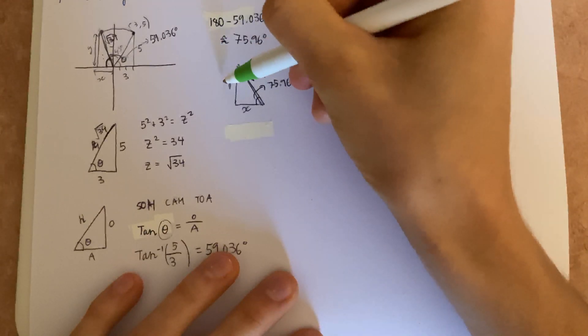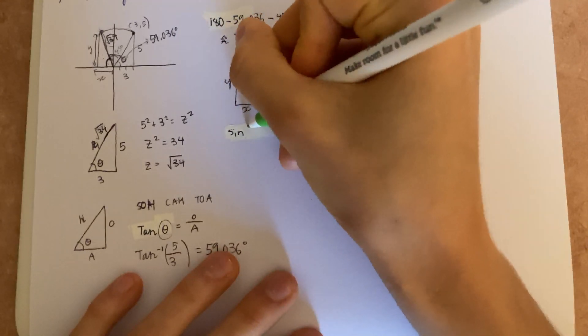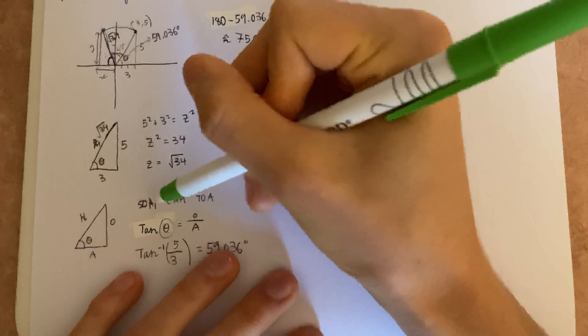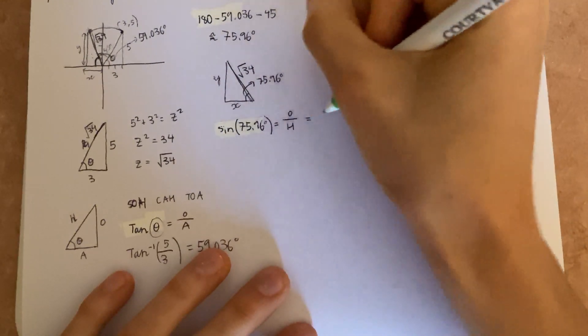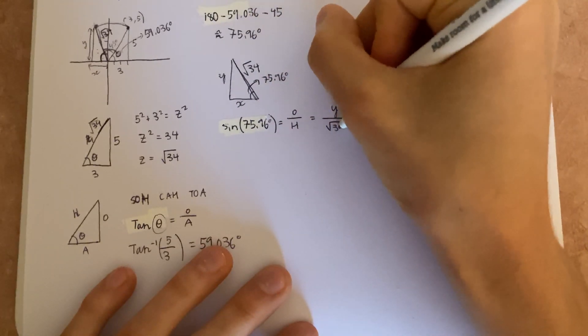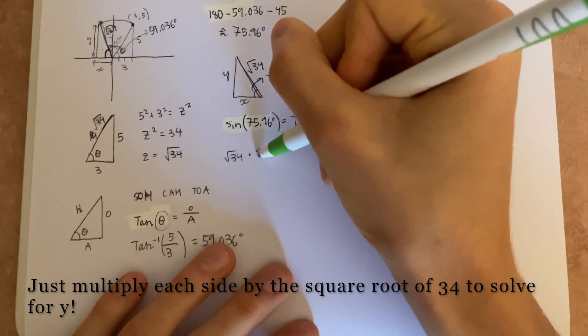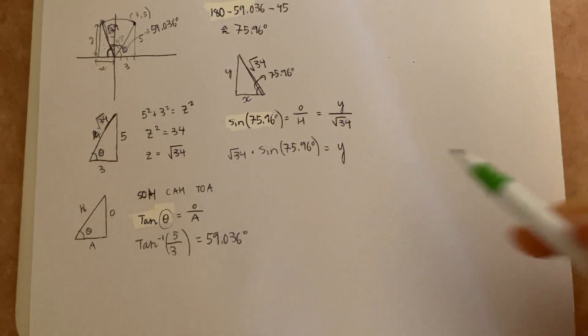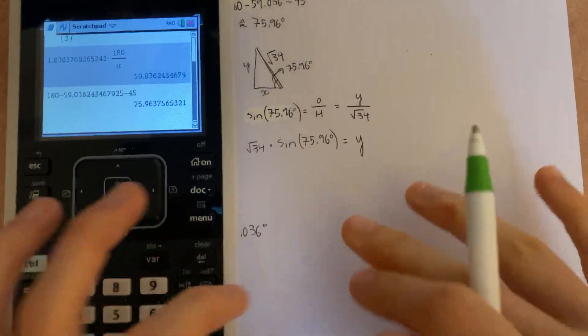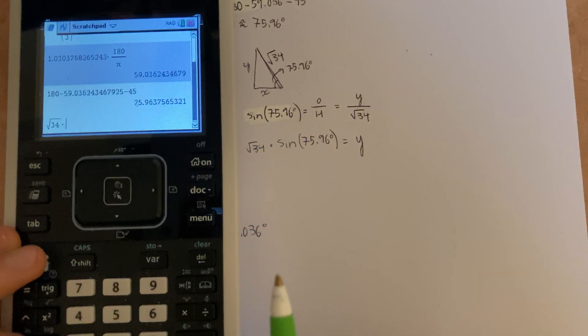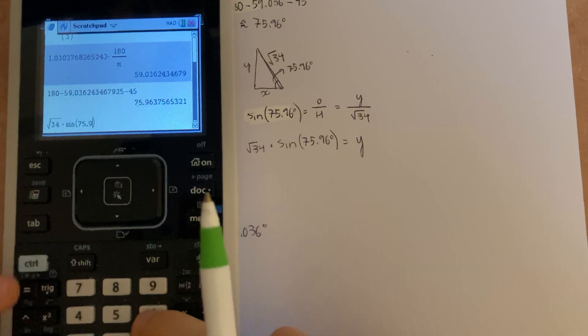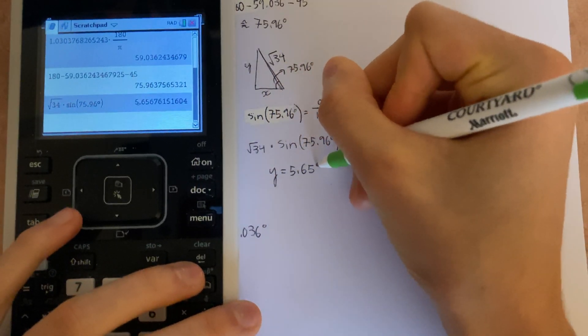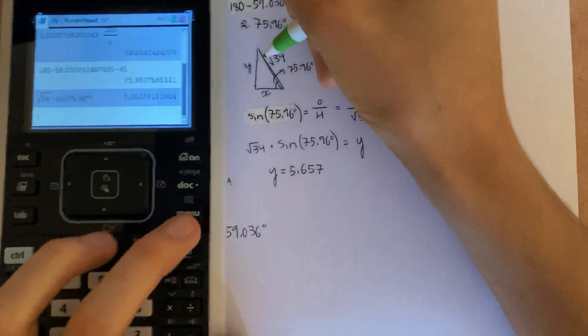Let's start off by solving for y. We know the hypotenuse and we know the angle, so we can use the sine function to solve for y. So the sine of this angle, 75.96 degrees, equals opposite over hypotenuse. That's y over the square root of 34. So the square root of 34 times the sine of 75.96 degrees equals y. So we can use our calculator to solve for y. The square root of 34 times the sine of 75.96 degrees equals 5.657. So that's this length right here.